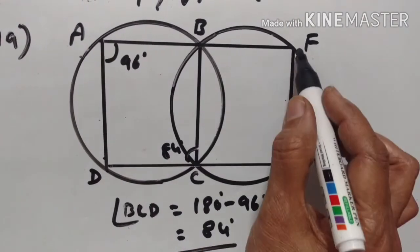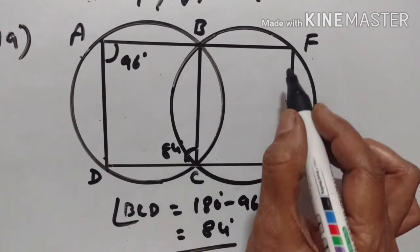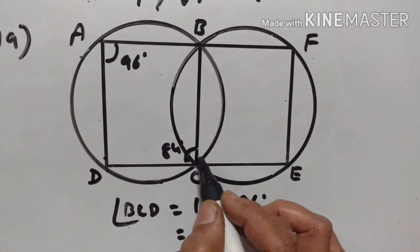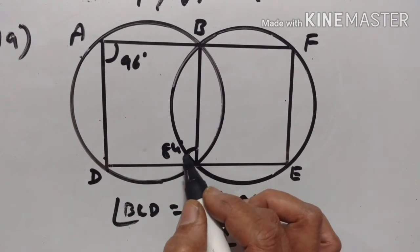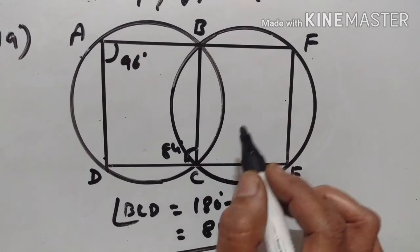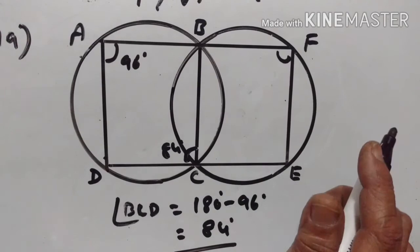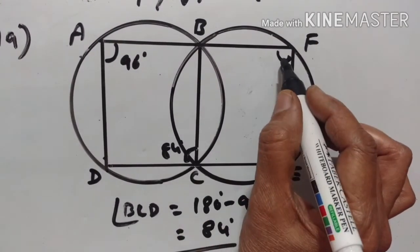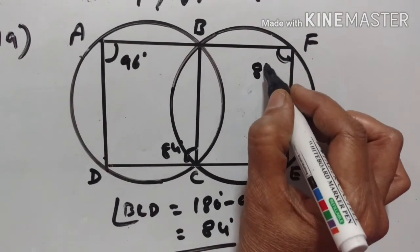BCEF is a cyclic quadrilateral. The exterior angle of a cyclic quadrilateral is equal to the interior opposite angle. Opposite angles are supplementary, so angle BFE is equal to 84 degrees.